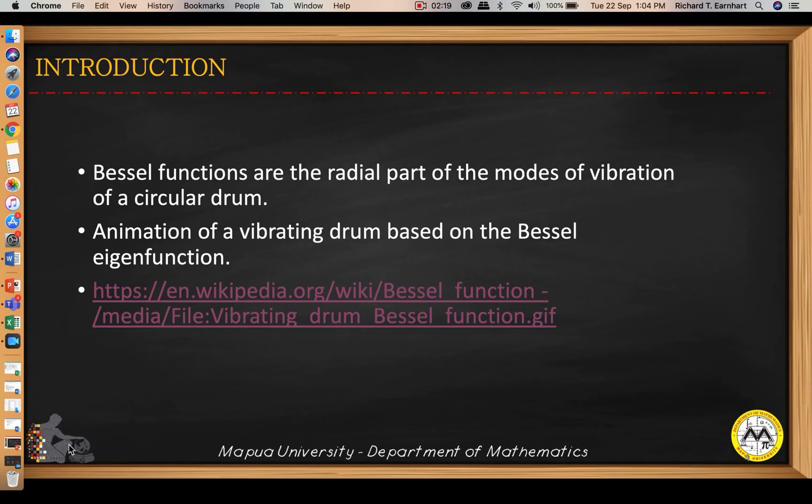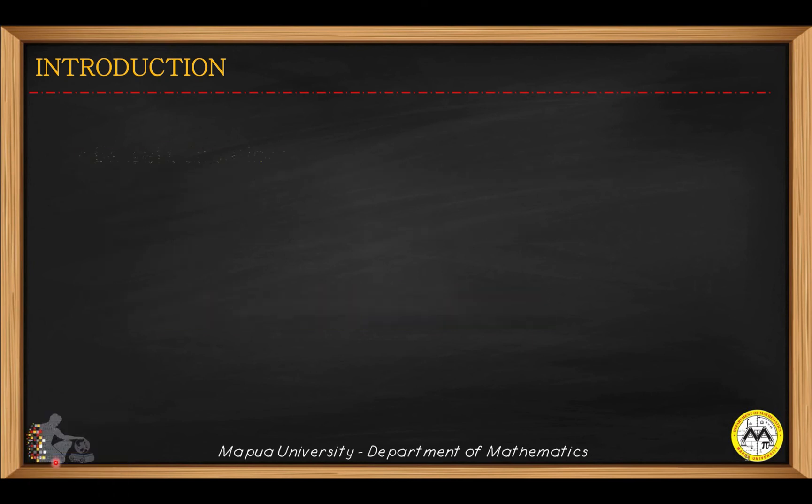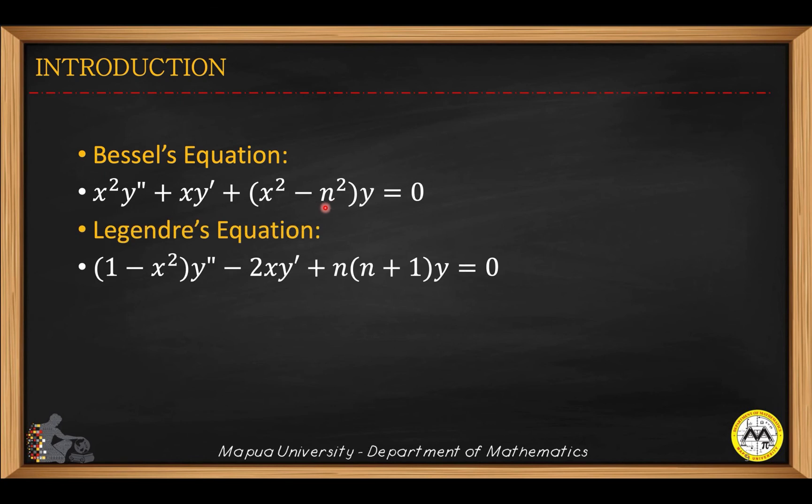This is the standard equation for the Bessel's function. N here is a parameter or constant. For the Legendre equation, N here is also a constant, which represents an integer from 0, 1, 2, 3, and so on.